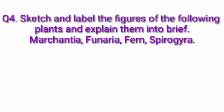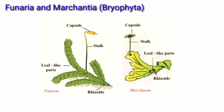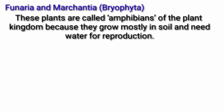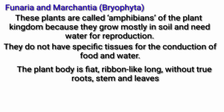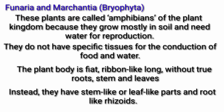Question 4: Sketch and label the figures of the following plants and explain them briefly — Marchantia, Funaria, Spirogyra. Answer — Funaria and Marchantia: These plants are called amphibians of the plant kingdom because they grow in moist soil and need water for reproduction. They do not have specific tissues for the conduction of food and water. The plant body is flat, ribbon-like and long, without true roots, stem and leaves. Instead, they have stem-like or leaf-like parts and root-like rhizoids.